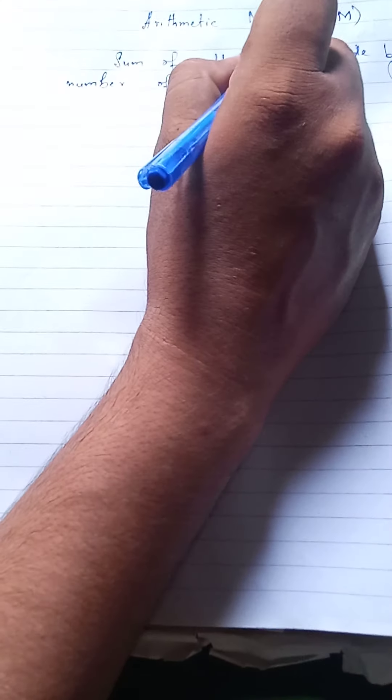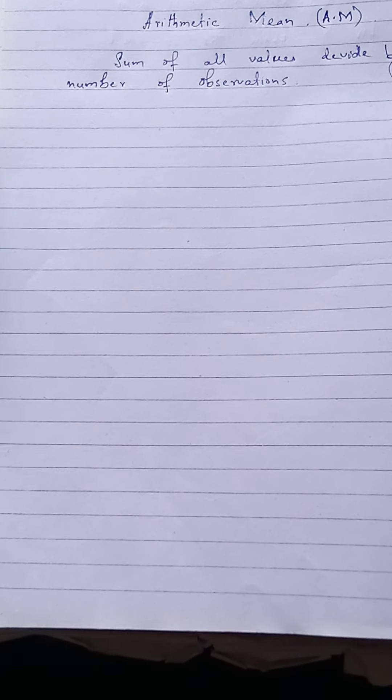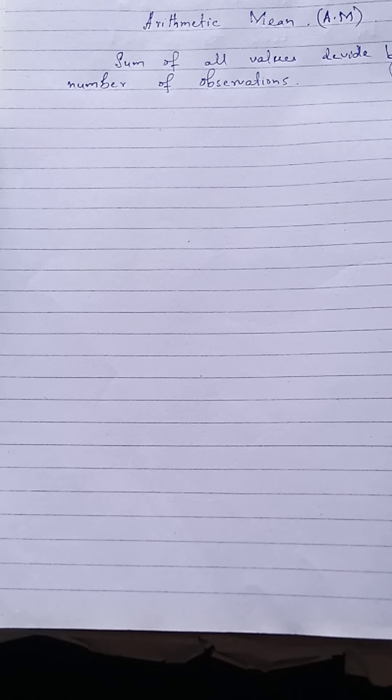जितने भी नंबर हैं जिनकी हमें arithmetic mean लेनी है, उन सब को sum करके वो कितने values हैं उससे divide करनी है। Observation कितनी है उस value से हमें इसको divide करनी है।